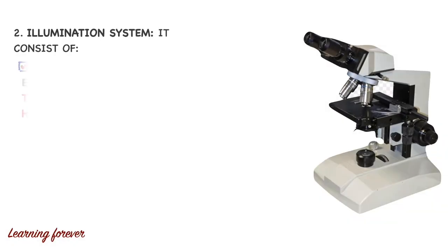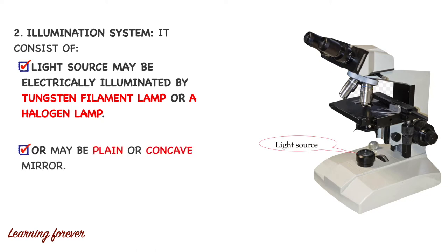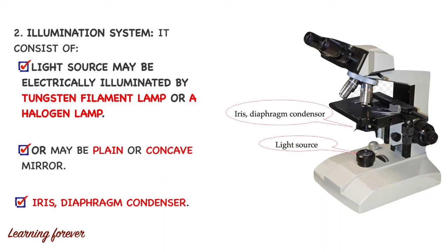Second is the illumination system. It consists of a light source, which may be electrically illuminated by a tungsten filament lamp or a halogen lamp. Most modern microscopes use these artificial lights, whereas student microscopes used in the laboratory do not have an artificial light source — they contain a mirror with two surfaces: a plane surface and a concave surface, which helps to illuminate the object using natural light. The next part of the illumination system is the iris diaphragm and condenser, located exactly below the stage.